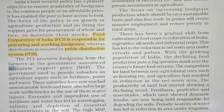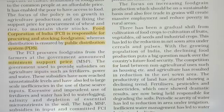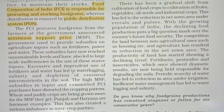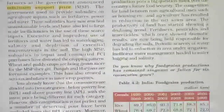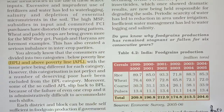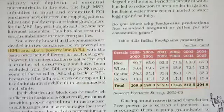The government also announces minimum support prices as well as pre-announced prices, meaning prices are announced in advance. There are two categories: BPL (Below Poverty Line) — those who are not able to afford or access food and cannot meet their basic nutritional needs — and APL (Above Poverty Line) — those who are able to fulfill their basic needs.